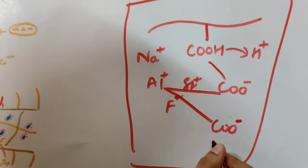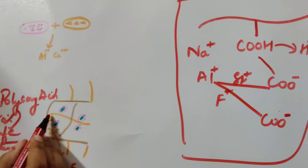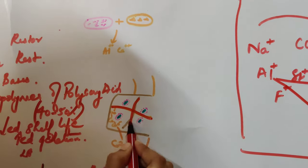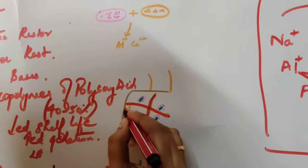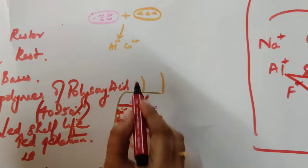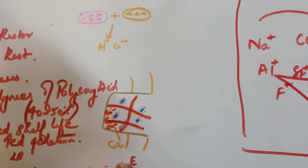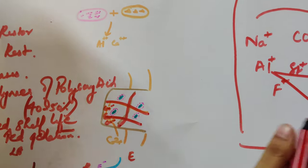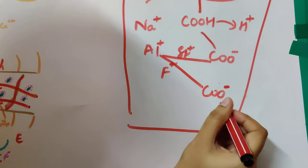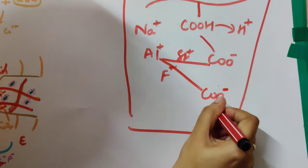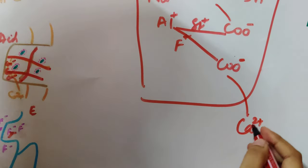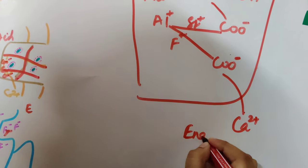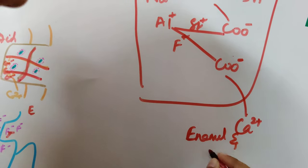A cross-linked structure will be formed. Here if you see, the calcium will be there, COO minus - this is the COO minus, and it will form a poly salt. Then after this, COO minus will also form a bond with the calcium which is present in the enamel and dentine.